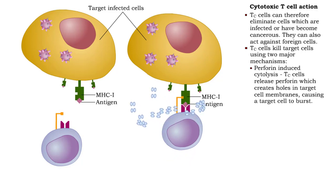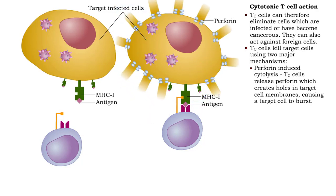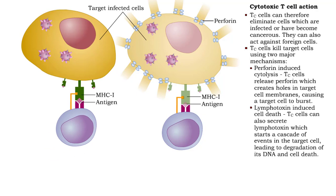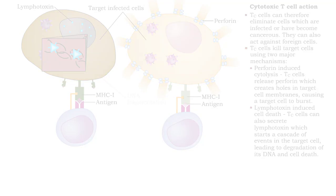Perforin, released by cytotoxic T cells, punctures holes in the target cell membrane, causing the target cell to burst. The second mechanism is lymphotoxin-induced cell death. Lymphotoxin, also secreted by cytotoxic T cells, starts a cascade of events in the target cell, leading to degradation of its DNA.